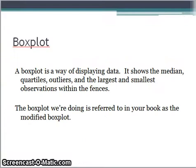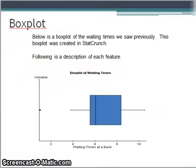Now let's look at box plots. A box plot shows the median quartiles outliers, and then the min and max within the fences. The one we're doing in your book is called the modified box plot because it shows the outliers. Make sure you're doing the modified box plot if you're looking at it in your textbook. I used StatCrunch to make this box plot here. These are the waiting times.